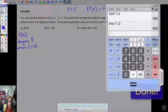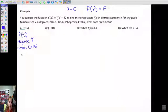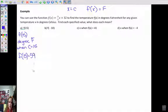So if we figure that out, 9 fifths times 15 is what we're going to take. So that would be 9 times 15, and then divide that by 5, 9 fifths plus 32, and that's going to be 59 degrees. So f of 15 equals 59 degrees in Fahrenheit.